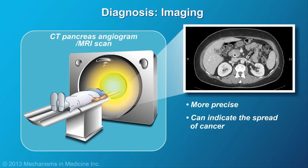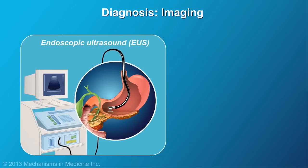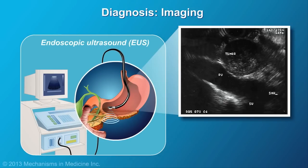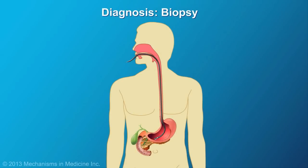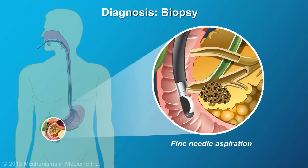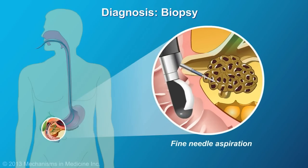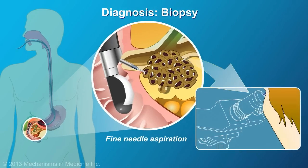An MRI scan may also help clarify the nature of a pancreas mass. Another increasingly used imaging technique is endoscopic ultrasound, in which a small probe is inserted into the stomach or small intestine at endoscopy to directly image the tumor. At the same time, a biopsy called an FNA, fine needle aspiration, can be performed by inserting a fine needle-like tube into the tumor. The cells removed are then analyzed to see if the tumor is cancerous.